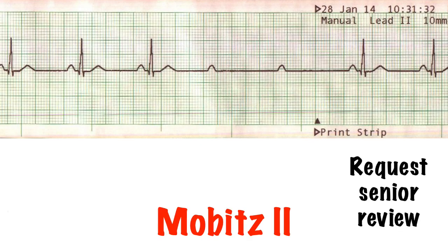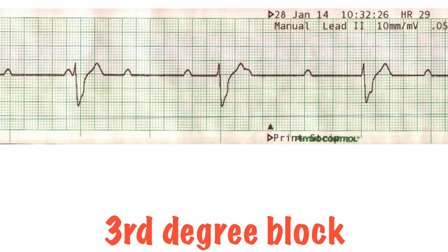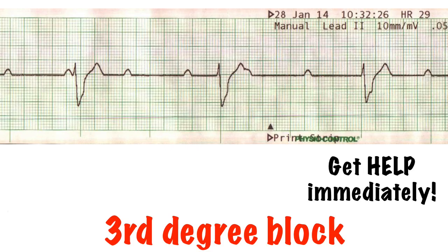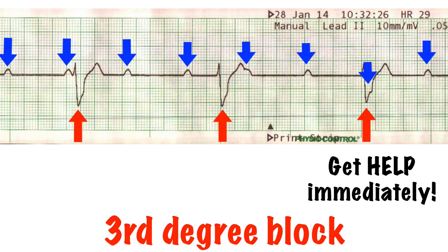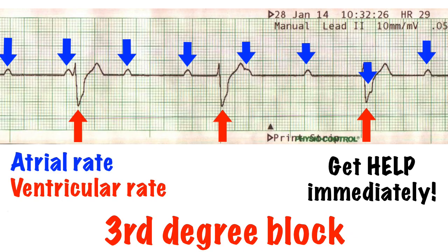Mobitz 2 doesn't have another name. It's defined by a dropped QRS complex with an otherwise regular PR interval. It can be in a pattern, or sometimes completely random. Third degree, or complete AV block, is even more serious. Here there's a total disassociation between the P waves and the QRS complexes. The impulse keeps going from the atria, but the AV node is on strike. Because the ventricles sit waiting for an impulse, if they don't get one they assume their lines of communication have been cut off, and eventually they fire. This is an escape rhythm — an emergency plan just to keep things going.